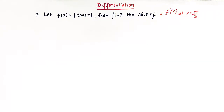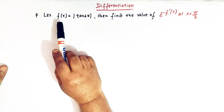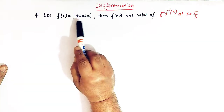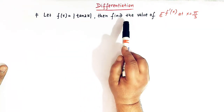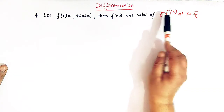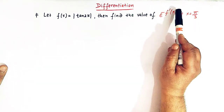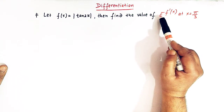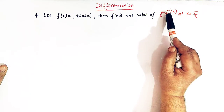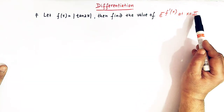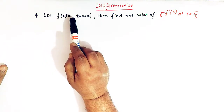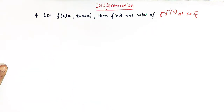Hello viewers. In today's session we are going to discuss a very important problem from differentiation involving the absolute value function. We have a function f(x) equal to mod of tan(2x), and we have to find the value of e raised to negative f prime of x at x equal to pi by 3.